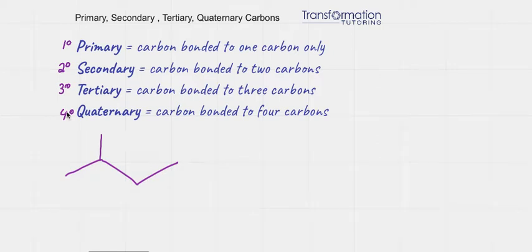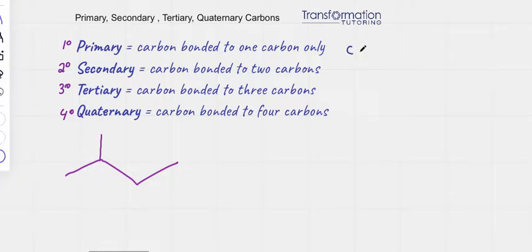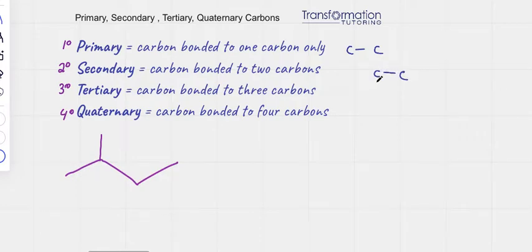A primary carbon is a carbon that is bonded to one carbon only. A secondary carbon is bonded to two carbons — for example, if I have this carbon and it's bonded to two carbons, that will be secondary.